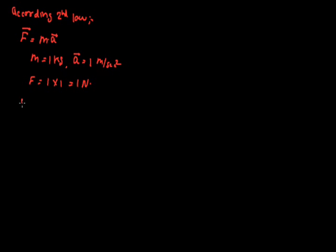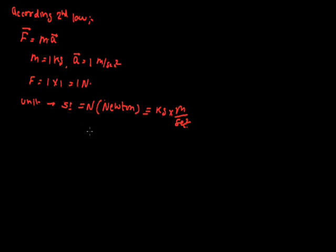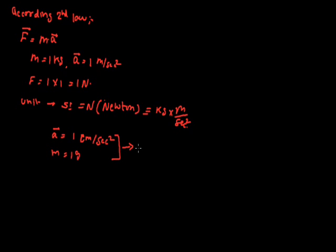The newton is the SI unit of force, equivalent to kg times meter per second squared. The other unit of force is the dyne, represented as 'd', used in the CGS system. The dyne is defined as the force required when a particle of mass 1 gram moves with an acceleration of 1 centimeter per second squared.